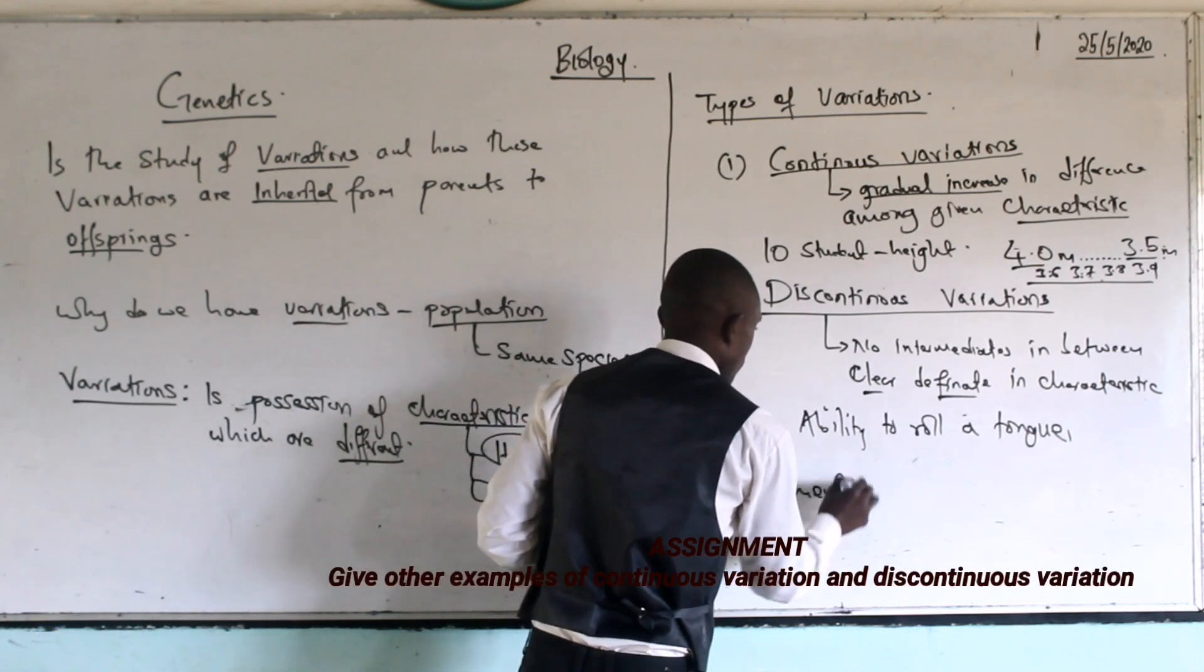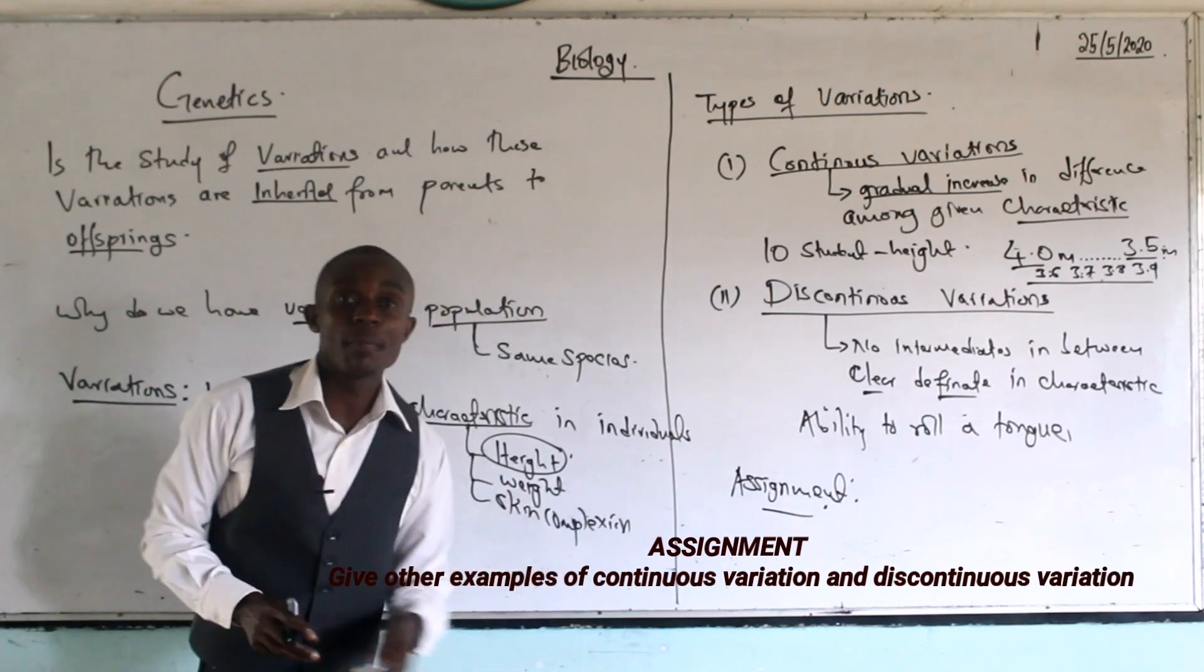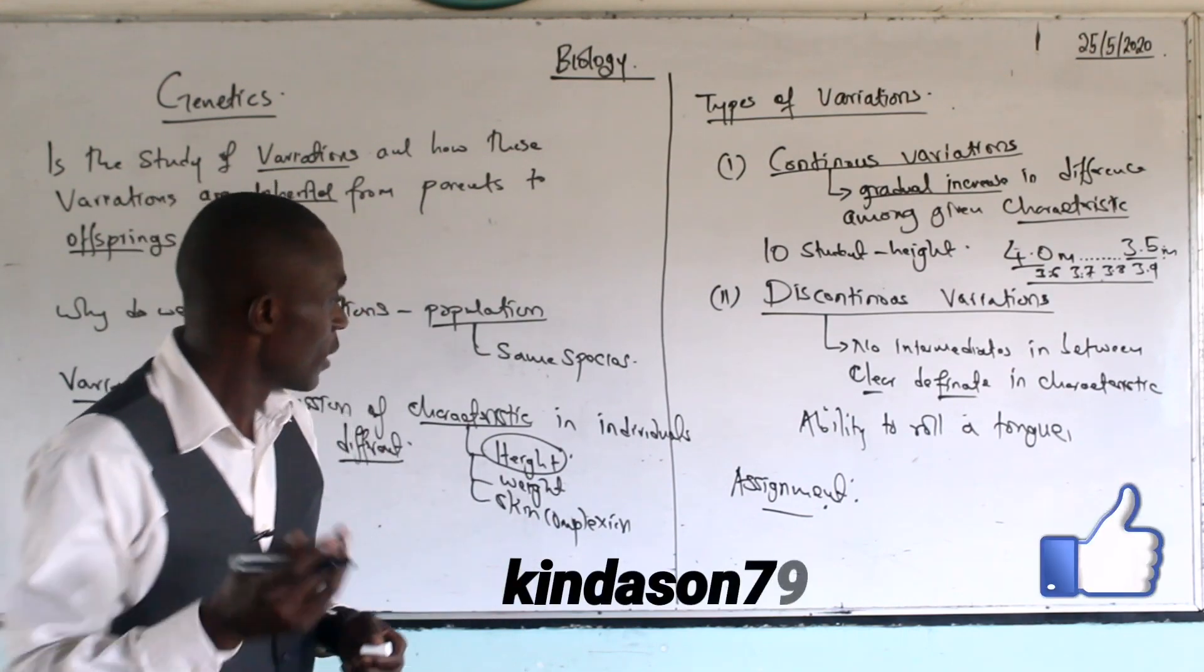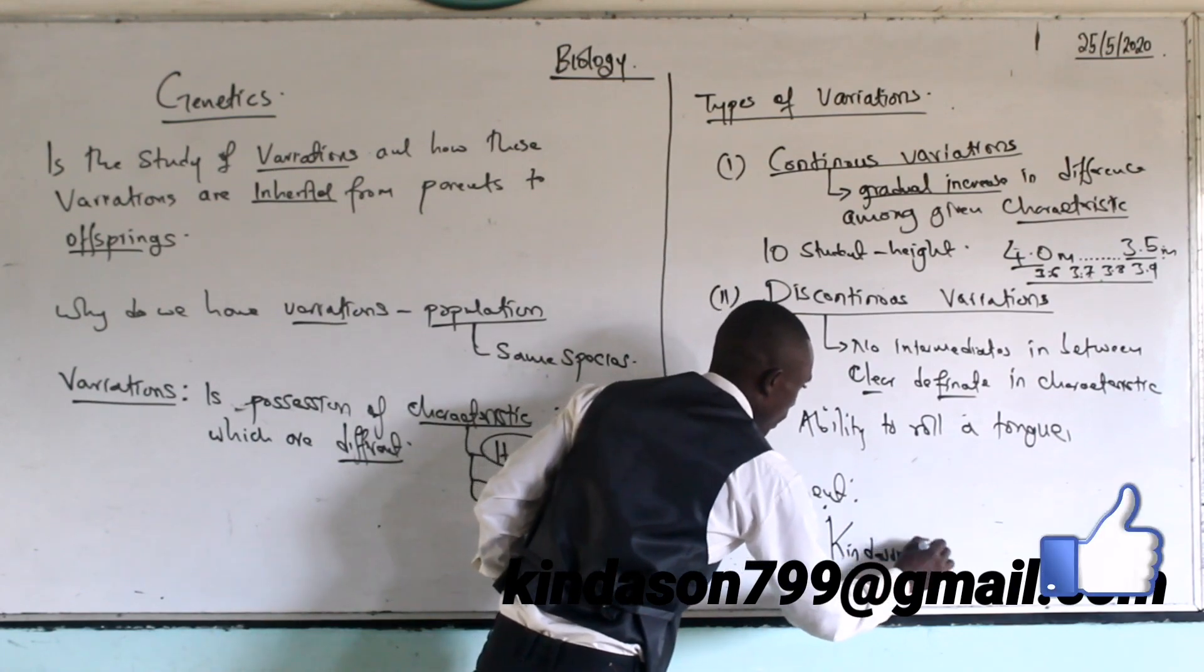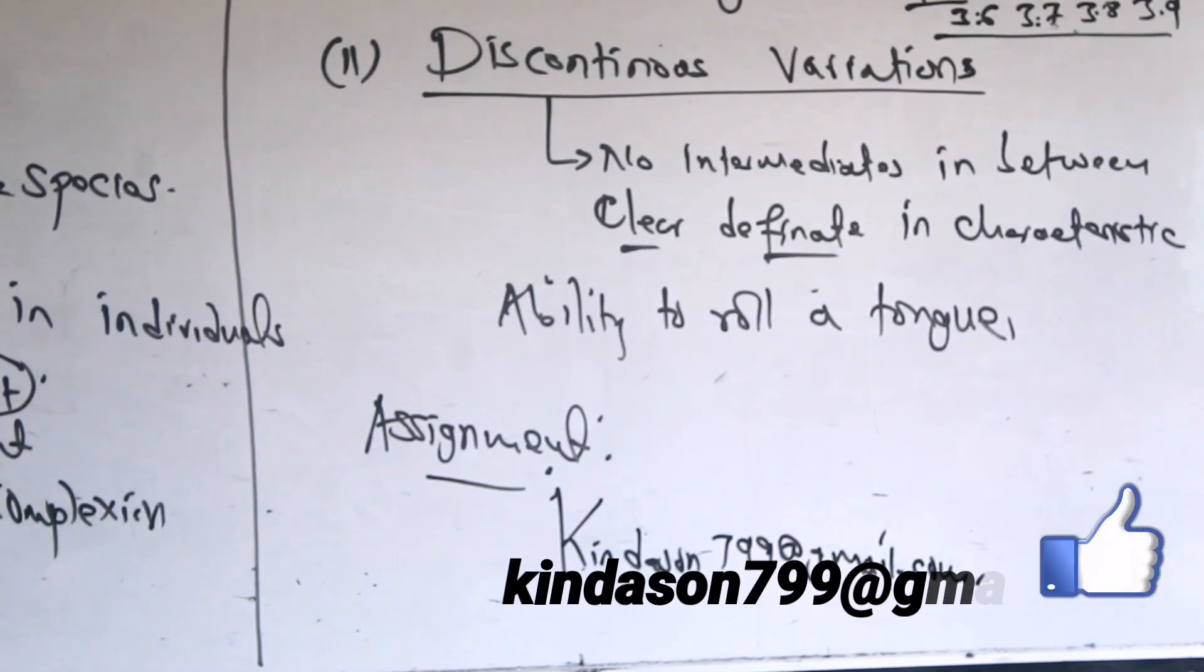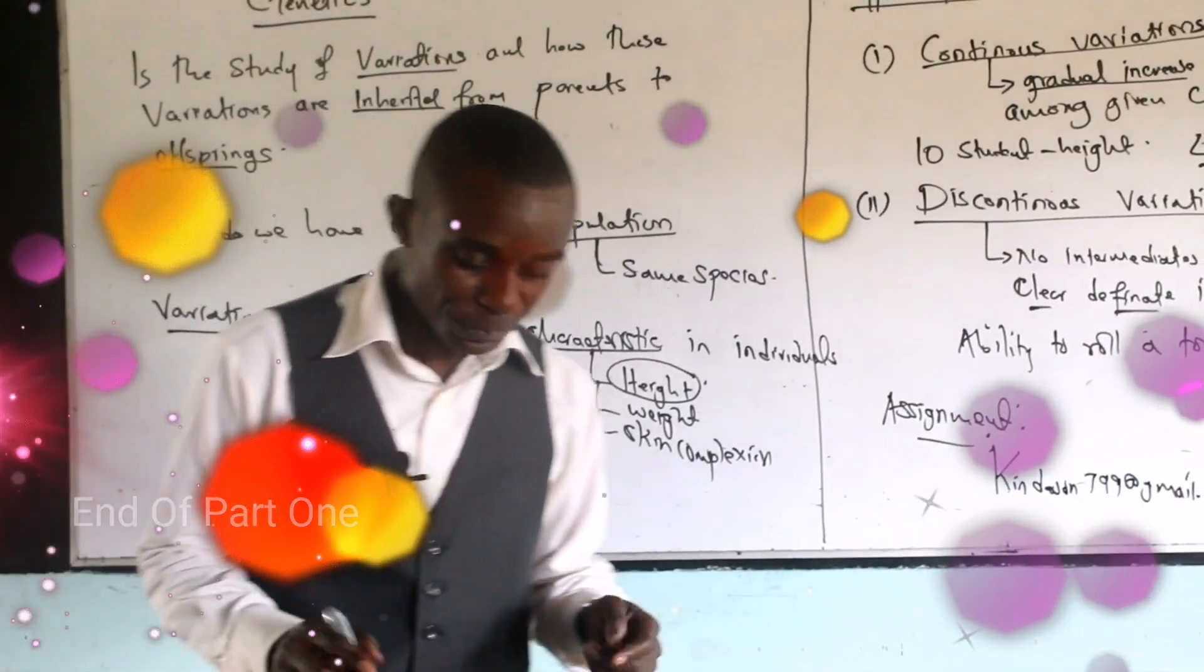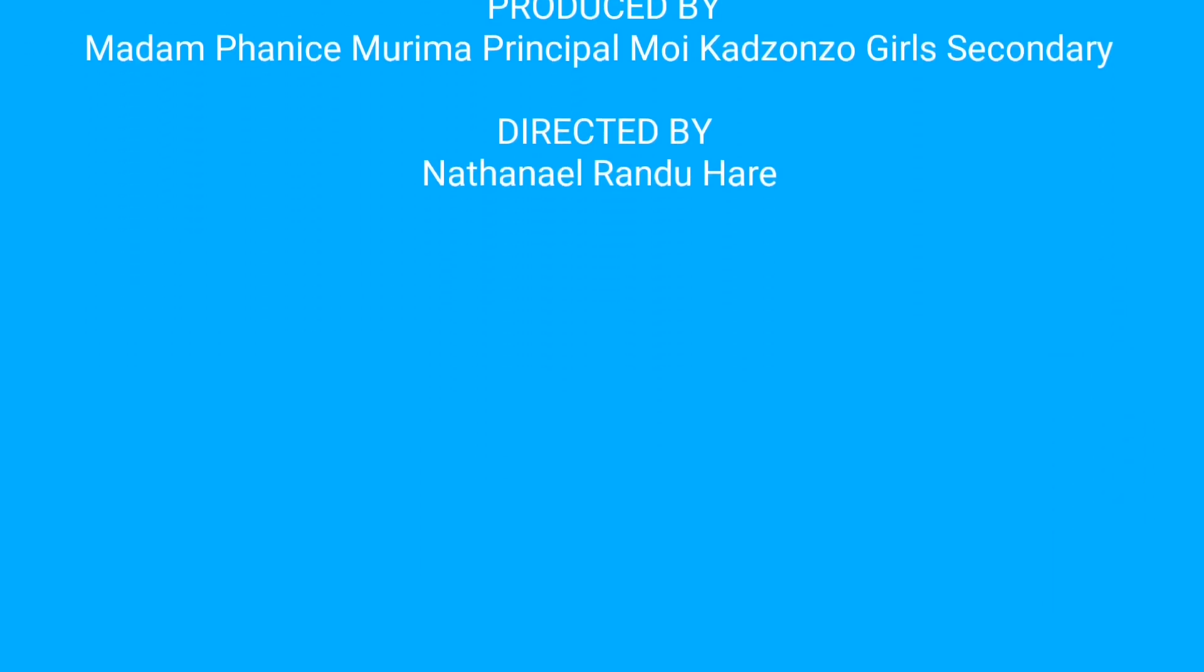Other examples of continuous variation and discontinuous variation are captured in our KLB, which I want to give you as an assignment. This is the end of our part two. Hope as you revise, you're going to capture more concepts. Make sure you send the assignment back to me. I have an email you can use to contact me: kinderson799@gmail.com. Make sure any student there at home is able to view this because it will help them in revising. Any area where you have a problem, kindly feel free to contact us. Thank you very much, my students.